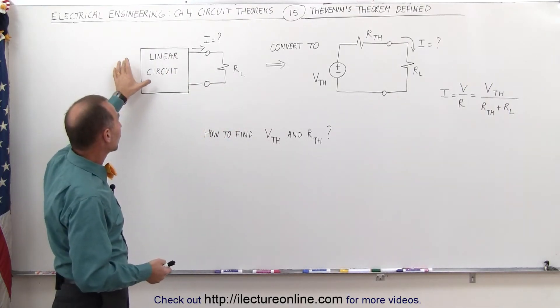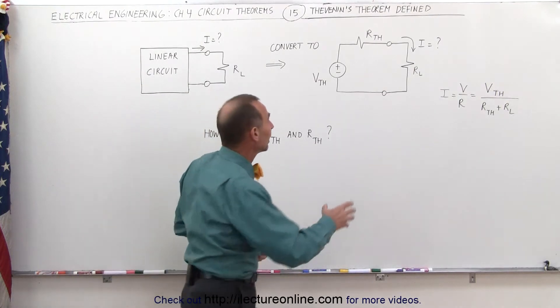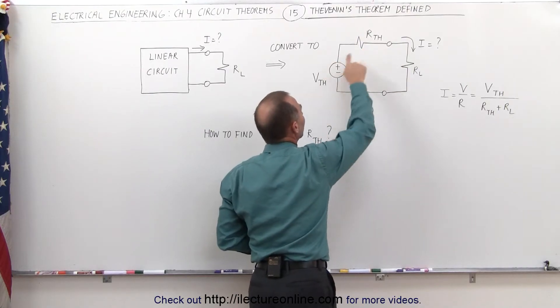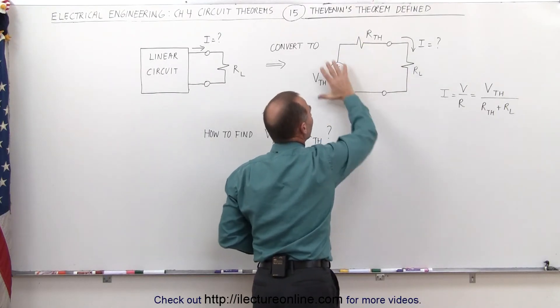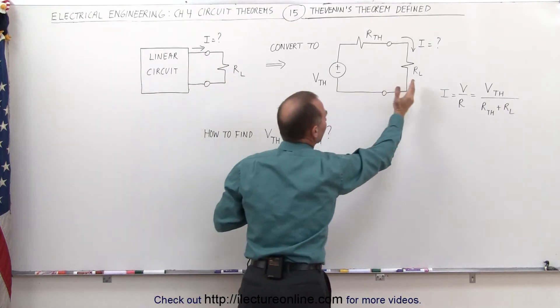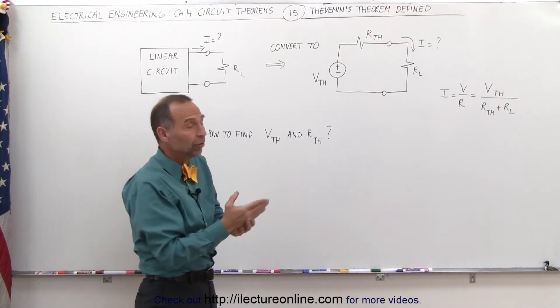And so what we need to do is convert our linear circuit into a Thevenin's circuit, in other words, a voltage and a resistor which is called the Thevenin's voltage and the Thevenin's resistor. This becomes a substitute of the linear circuit which is then connected to the same load resistor, and then it becomes really easy to find the current through the resistor.